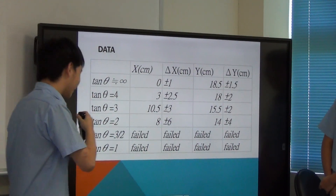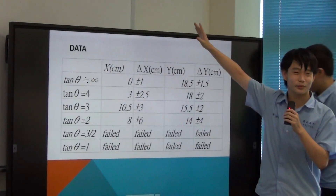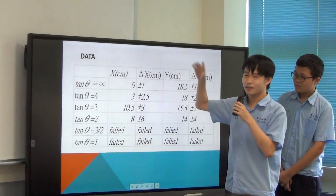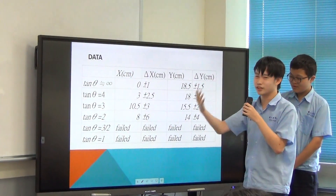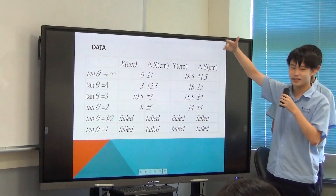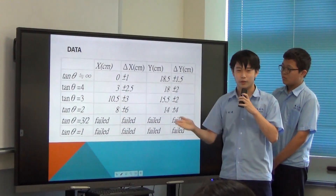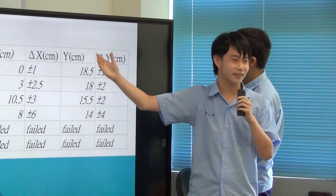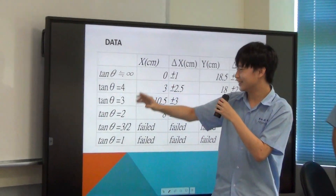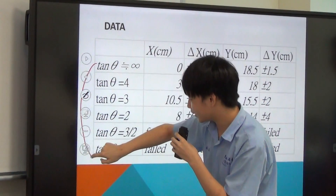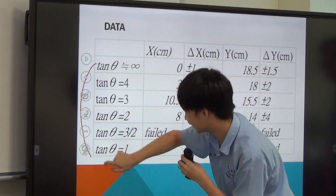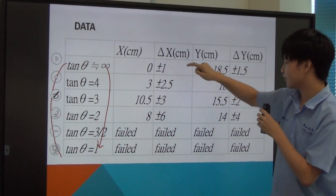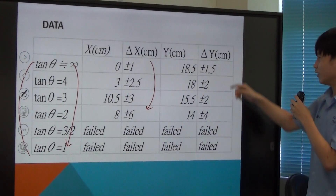Now I'm going to talk about the data. Can anyone tell me the relationship between the value of tangent theta and delta x? Delta x means the displacement. If the value of delta x is higher, it means the shape is stronger or more stable. You can see that the value of tangent theta basically decreases on this side, while delta x and delta y basically increase on this side.